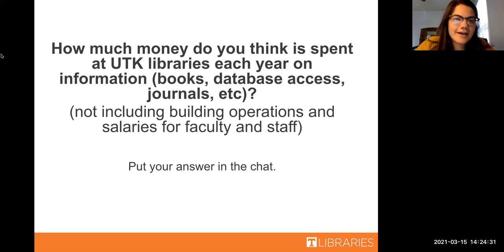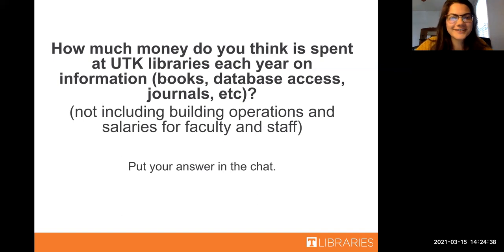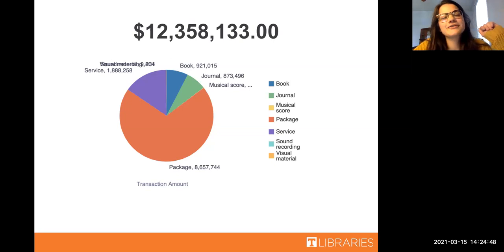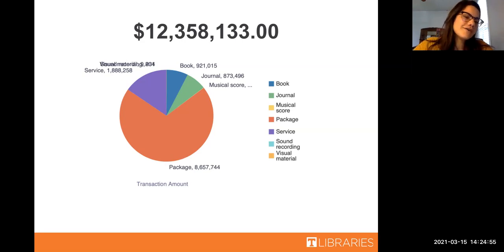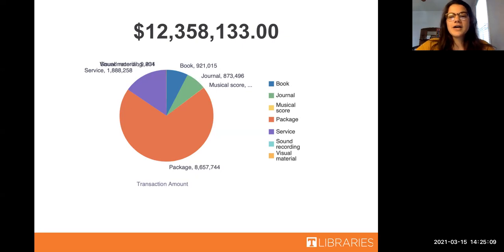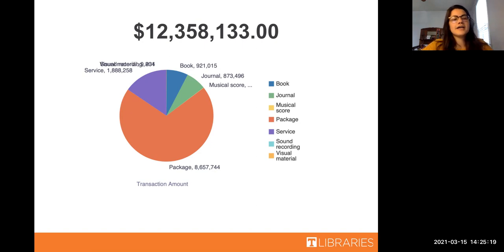We got a guess of 2 million — that's a good guess. The answer is approximately 12 million dollars, and we have a breakdown here of each type of information that money is spent on. Twelve million is a lot of money, and that is just providing access to information. It is a huge privilege to be a college student at UT and to be able to access, interact with, and look through these materials.